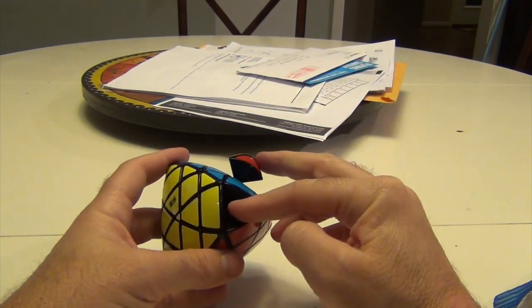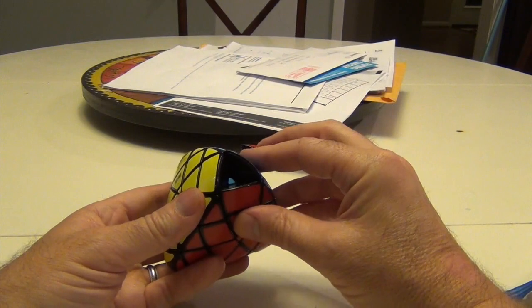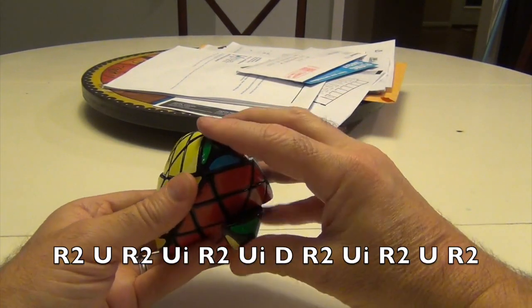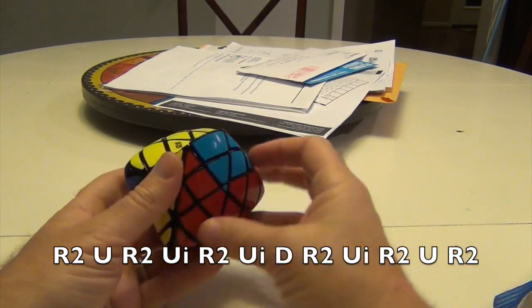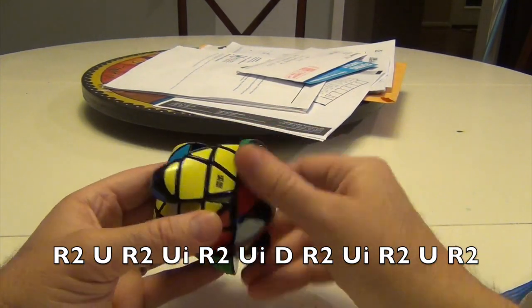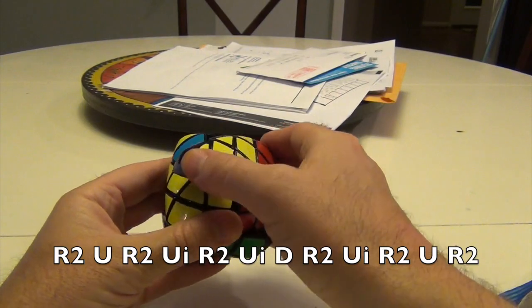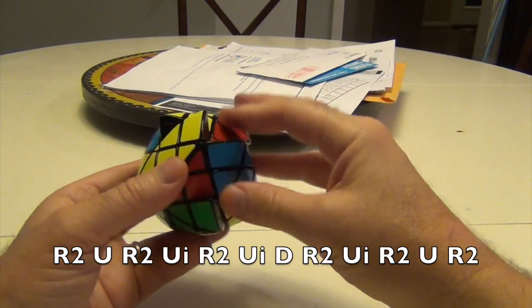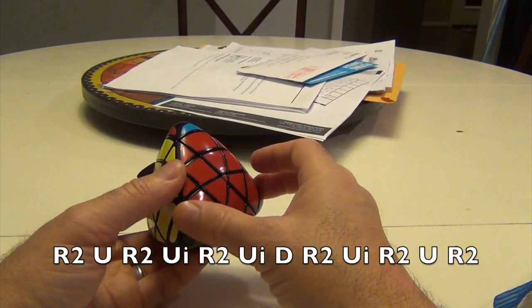Don't worry about anything else. So the corner swap is going to be 2R U, 2R U-inverse 2R, U-inverse-D, 2R U-inverse 2R, and this is moved back.